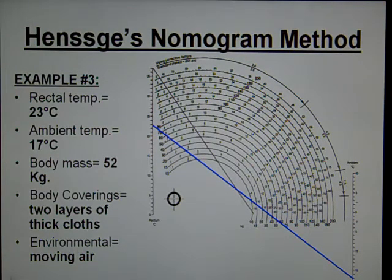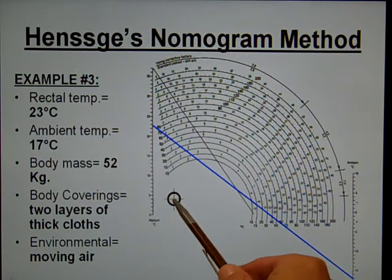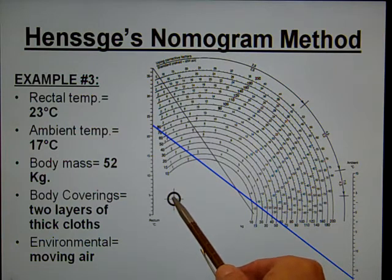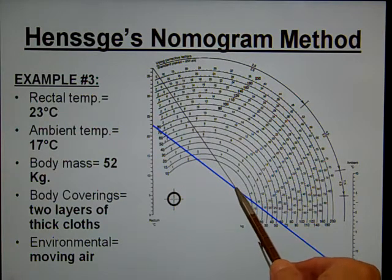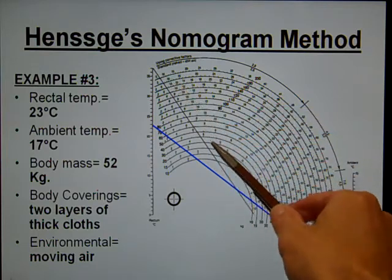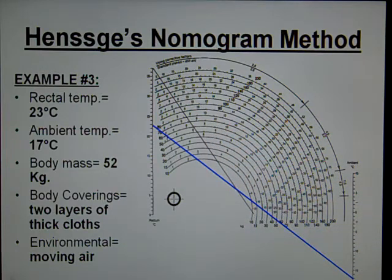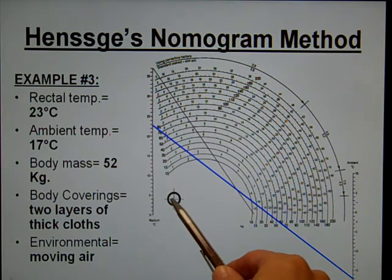Next, I need to start from the center of the circle or the target location, and I'm going to go through the point at which my blue line intersects the black line, which is part of the nomogram. Right here is where I want to intersect.